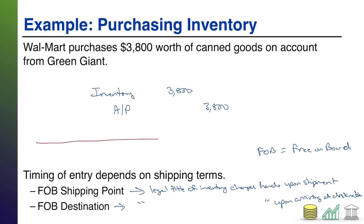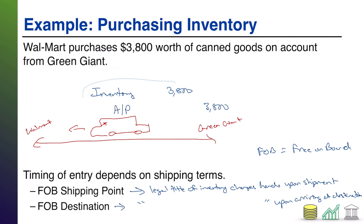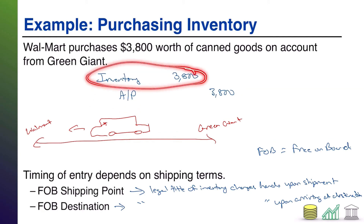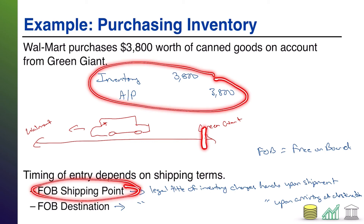Think about a road between two businesses — Walmart over here and Green Giant over here. Between them, we have a truck carrying the goods from Green Giant to Walmart. The question is: who has legal title or ownership of those goods while it's on the truck? If it's FOB shipping point, Walmart will record the journal entry when the truck leaves Green Giant — when it leaves its shipping point. At that point, Walmart owns the goods. It records the journal entry, owns the goods while they're on the truck, and if something happens to that truck, Walmart is on the hook.